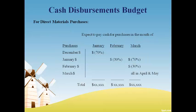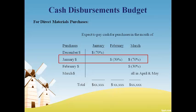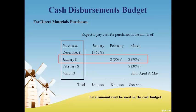The cash disbursements budget is used to estimate when cash will be paid for purchases of direct materials purchased on account. The accountant looks at company payment history and estimates the percent of purchases for the month that will be paid in future months. Generally, payments are made over a two-month period. The January row projects the amount of January purchases that will be paid in each month. The accountant estimates that 30% will be paid in the same month as the purchase and 70% will be paid the month after the purchase. To prepare this budget, state the total purchases from the direct materials budget for each month, put the percent expected to be paid on the row of the purchase, and multiply the purchase dollars by the percent in the column to get the dollar amount expected to be paid. The total amounts for the month will be used on the cash budget.